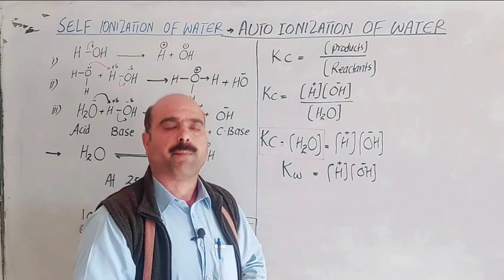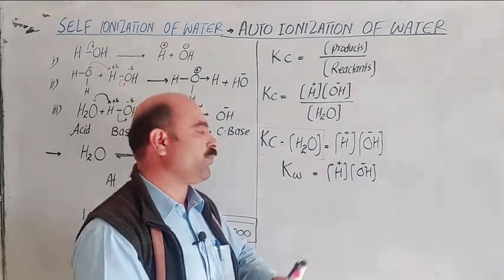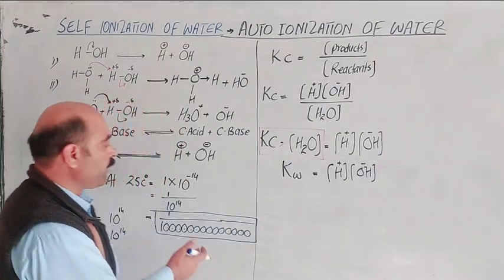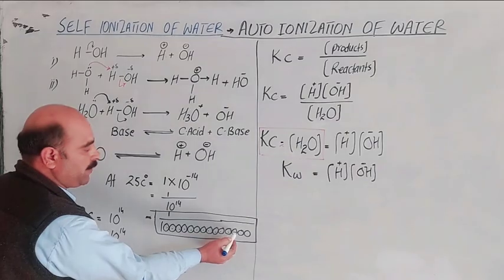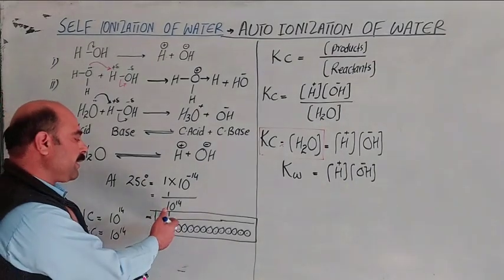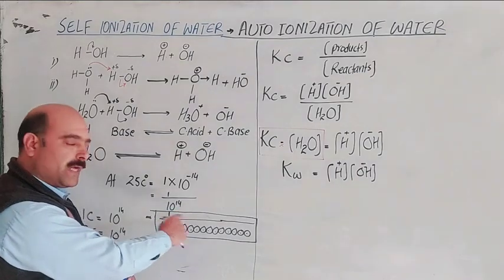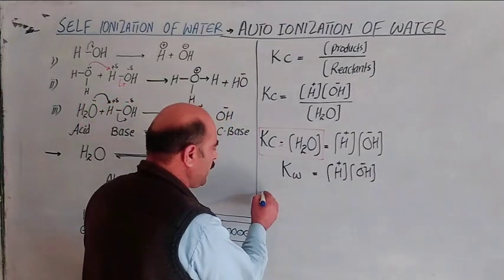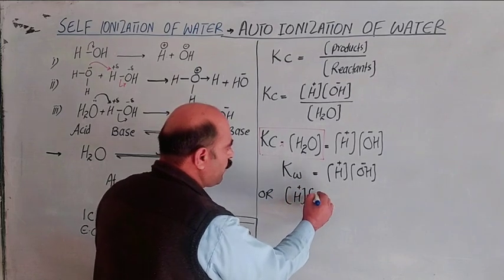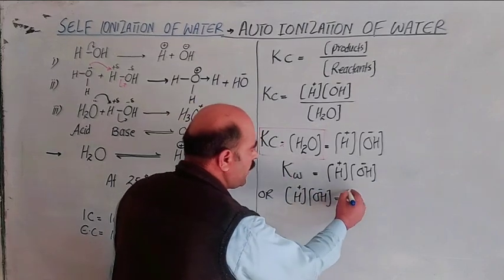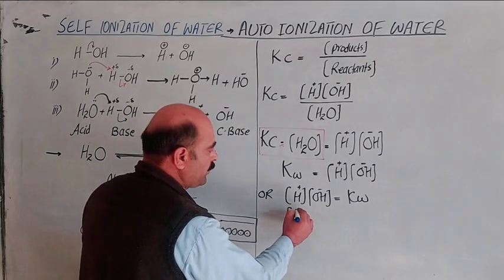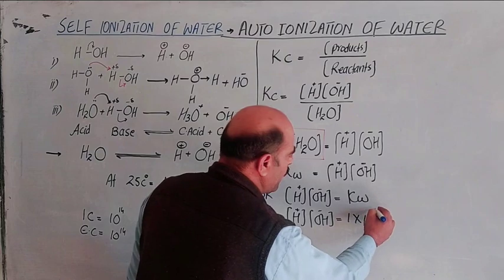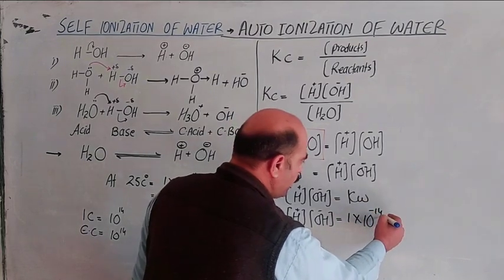Thus, Kw equals concentration of hydrogen ion multiplied by concentration of hydroxide ion. Kw equals 1×10⁻¹⁴ mol² per dm⁶ at 25°C. Since one water molecule gives one hydrogen ion and one hydroxide ion, the concentration of hydrogen ion equals the concentration of hydroxide ion. Therefore, each equals 1×10⁻⁷ mol per dm³. As temperature increases above 25°C, more water molecules ionize.